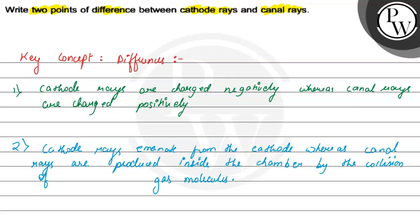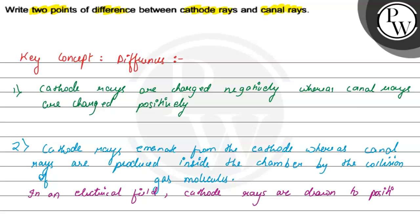Also, in an electric field, when we apply electric field E vector, cathode rays are drawn to the positive electrodes. This is very important because they are negatively charged, so when we apply an electric field, cathode rays are drawn to positive electrodes. These are the basic two points of differences — I hope you understood the concept.